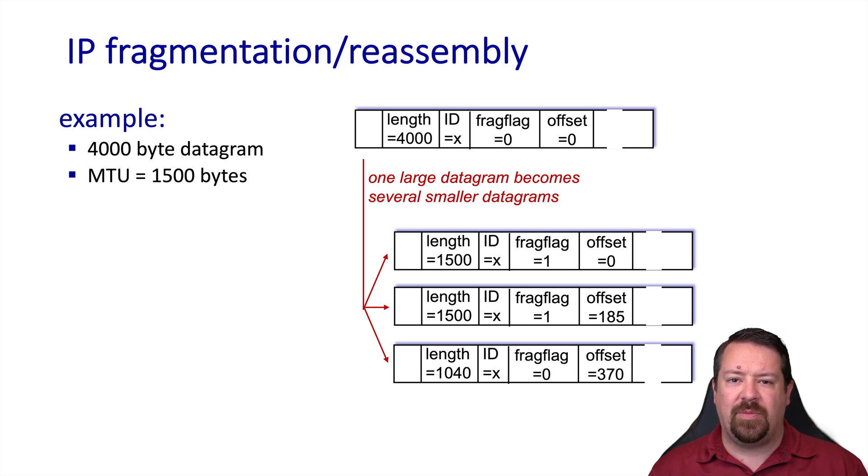The first two fragments also have the more fragments bit set so as they arrive with the receiver it will know that there are more fragments to follow that it needs to reassemble. The last fragment has the more fragments flag set to zero and that's how the receiver can tell it's the last one.